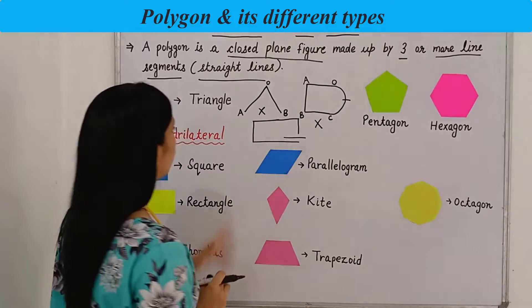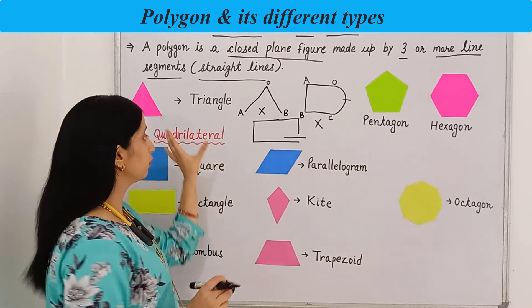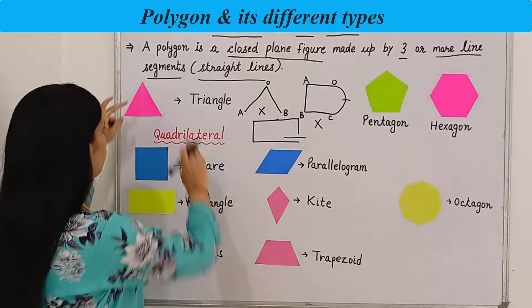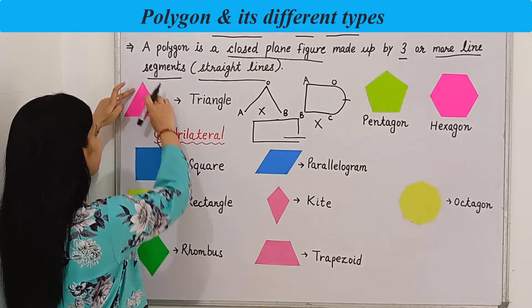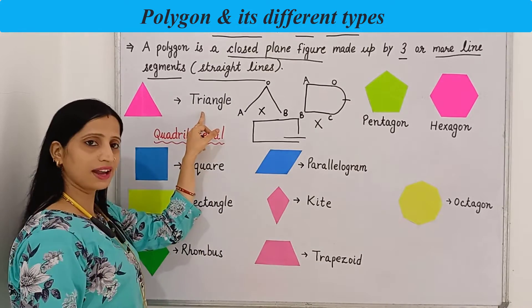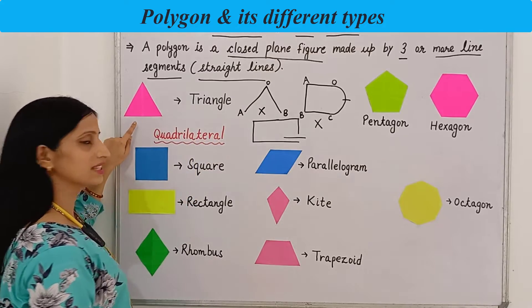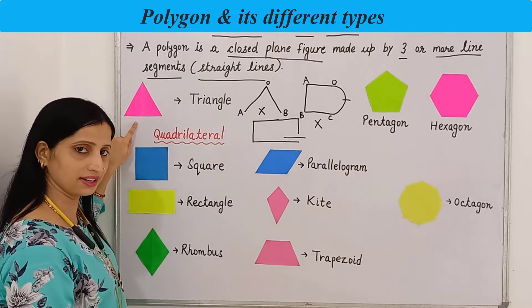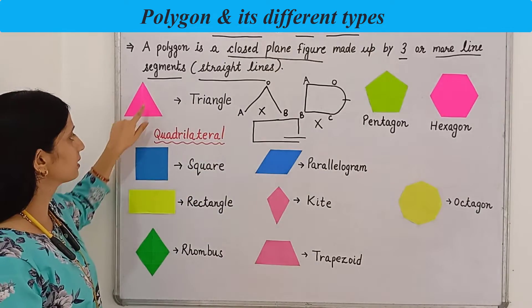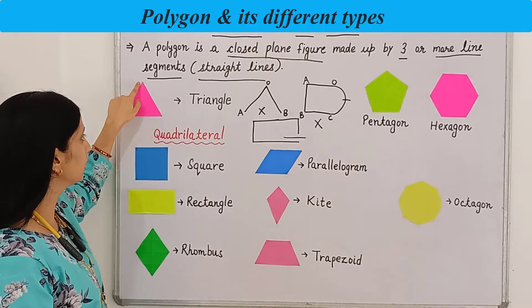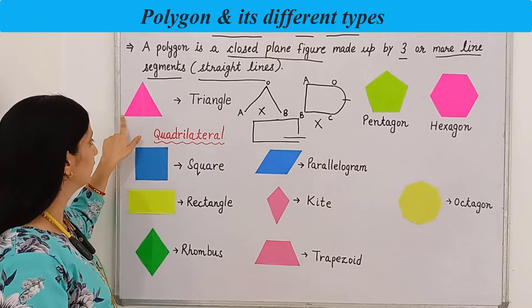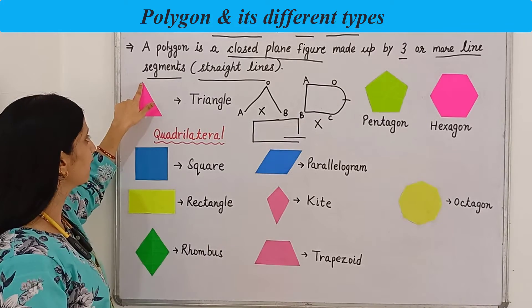Now, what do we call the different polygons? A polygon with three sides is known as a triangle. This is a triangle — it has three sides, three corners or three vertices, and three angles.